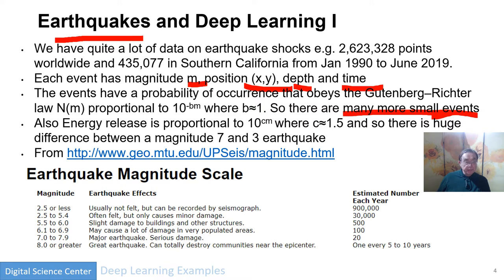We're trying to predict the big events. The energy is actually proportional to roughly 10 to the 1.5 times the magnitude, so the big earthquakes have a lot of energy. There's obviously a huge difference in energy between magnitude 7 and 3. From Michigan Technical University, we have a classification: 8 is a great earthquake, 7 to 8 is major, 6 to 7 can be pretty damaging. Great earthquakes are less than one per year, 7 to 8 is around 20 per year, and occurrence increases dramatically as you go down in magnitude.